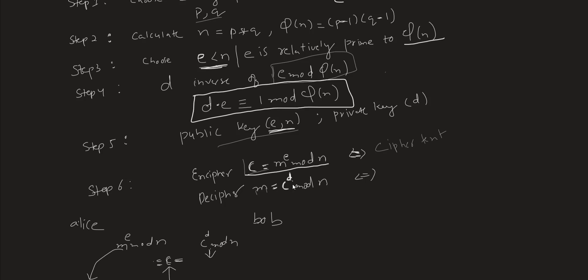Decryption uses the function of d and n: c raised to the power d mod n, which gives us the plaintext back.